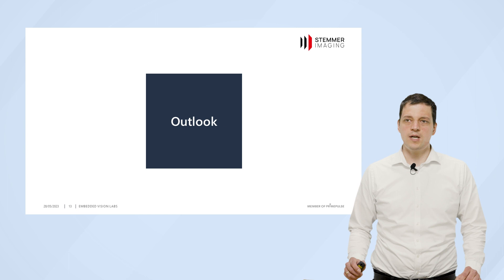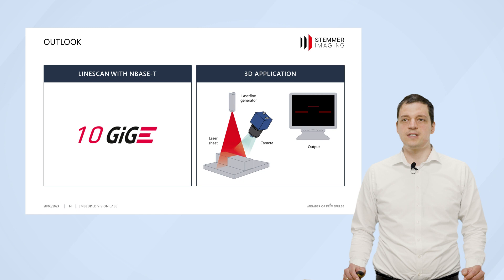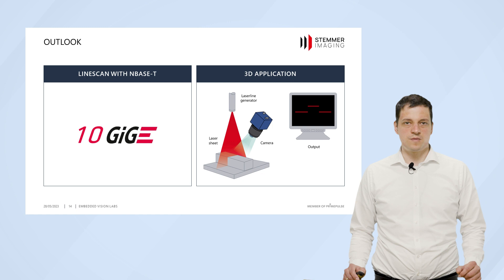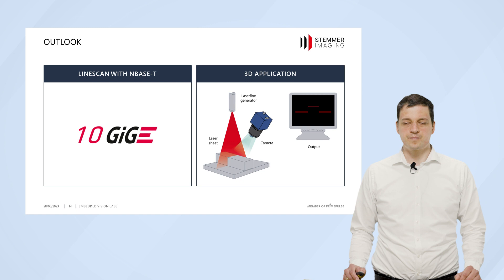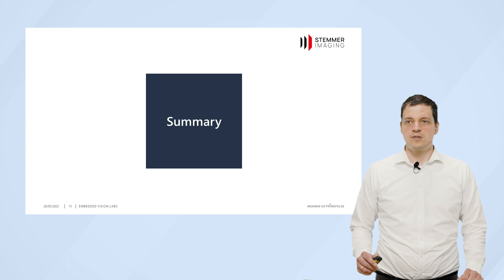Now for a short outlook. What we can do in the future — or already can do — is using NBase-T cameras together with Modular Embedded, like a 5GigE or 10GigE Linescan camera. And if you think about it, 3D applications or 3D triangulation systems are not so much different from a Linescan camera. We could use Modular Embedded to acquire from a 3D camera and do some pre-processing on the range map, or use a normal area scan camera and use the graphics card on our board to extract height profiles from the area scan image.